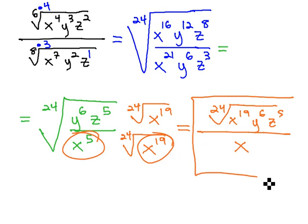And our final answer is the 24th root of x to the 19th, y to the 6th, z to the 5th, all over x.